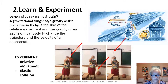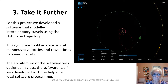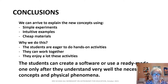In this project we developed software that modelled interplanetary travels using the Hohmann trajectory. Through it we could analyse orbital maneuver velocities and travel times between planets. The architecture of the software was designed in class, but the software itself was developed with the help of a local software programmer.